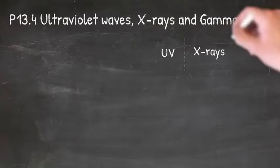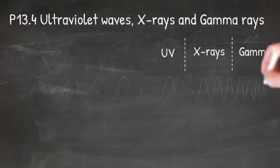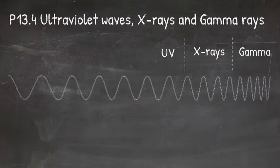In this video we are looking at ultraviolet waves, X-rays and gamma rays. These sit at the far end of the electromagnetic spectrum with the highest frequencies and the shortest wavelengths.